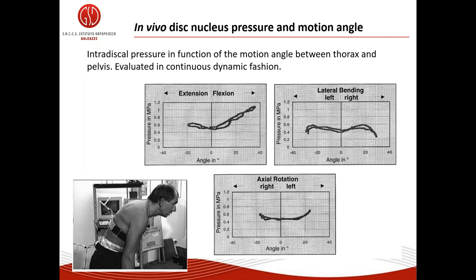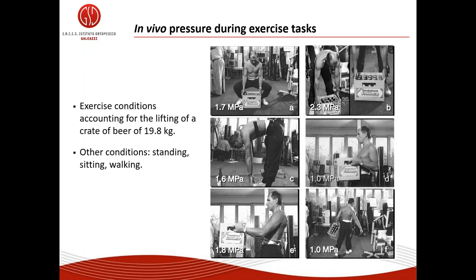Specifically, they evaluated lifting a crate of beer weighing around 20 kilos in different positions: squat position, legs almost straight, holding the crate near the chest and away from the chest, and a dynamic walking with load condition. They also evaluated standing, sitting, and walking conditions.